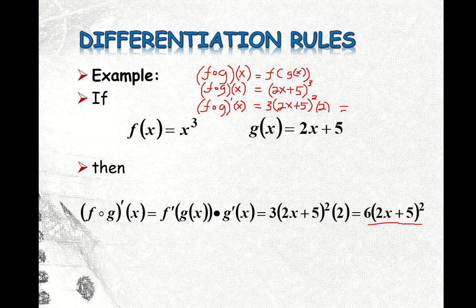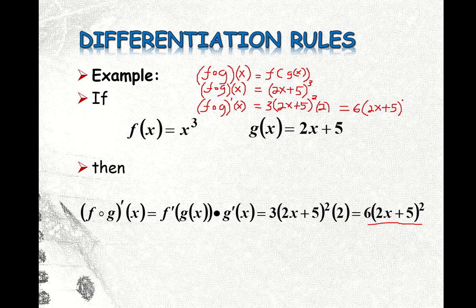So the derivative equals 3 times 2 which is 6, multiplied by the quantity (2x + 5) raised to the power 2. This is what we missed last time — I forgot to put this exponent here. That's why I just multiplied 6 by 2x, because I forgot to include this term. So this is the correct final answer. If you want, you can expand using binomial expansion and then multiply by 6.